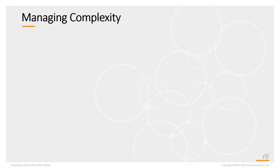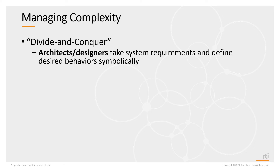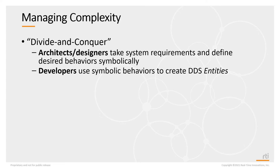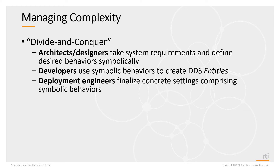How do you manage the complexity of using DDS QoS? You could use a divide-and-conquer strategy. Architects and designers would take system requirements and define the different desired behaviors symbolically. Developers would use these symbolic definitions to configure the DDS objects for the application communications infrastructure. These symbolic definitions would become actual QoS settings when the system needs to run — either in testing or actual deployment — at which point symbolic definitions become concrete QoS values.